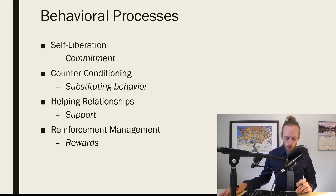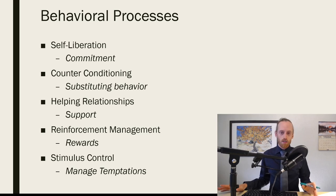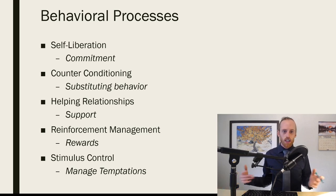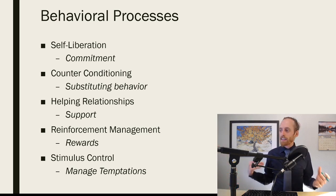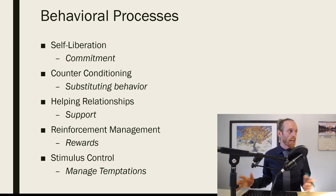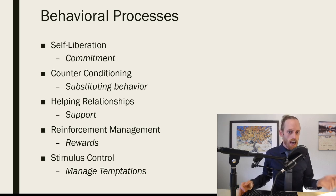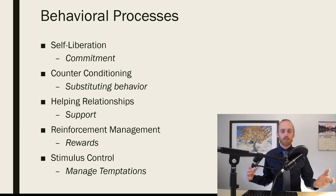And then stimulus control: this is you managing your environment. Let's say with cigarettes, you can't have cigarettes in the house because you'll smoke them. You have to know who you are and then set up your environment to work with you. Maybe you can't get up in the morning and pack your gym bag and go to the gym, so you pack your gym bag ahead of time so all you have to do is grab your bag and go. These are ways you can manage your environment.